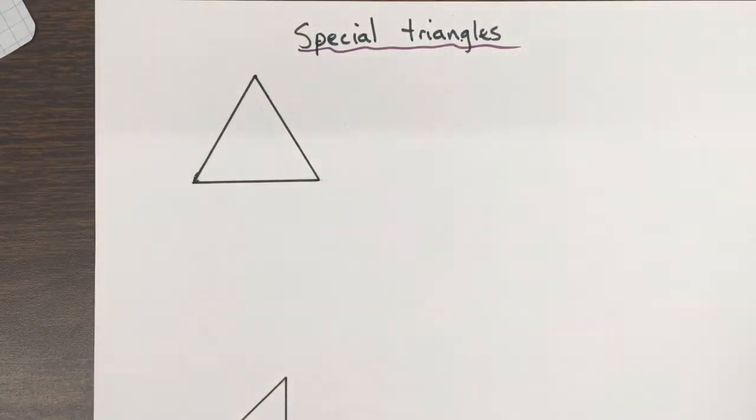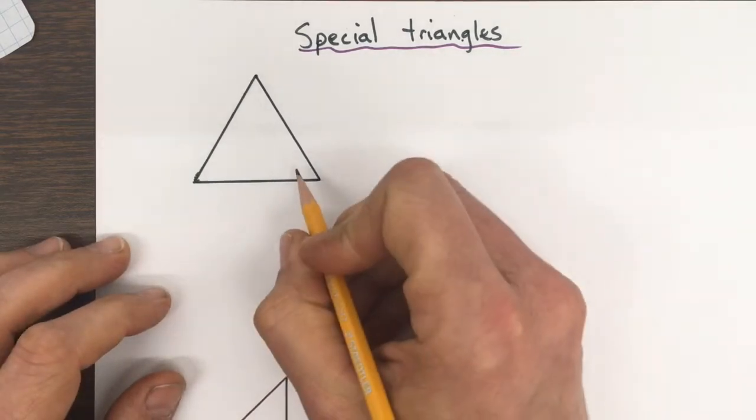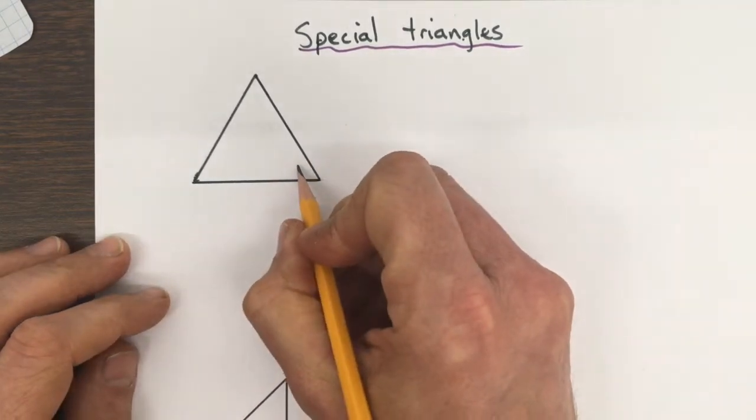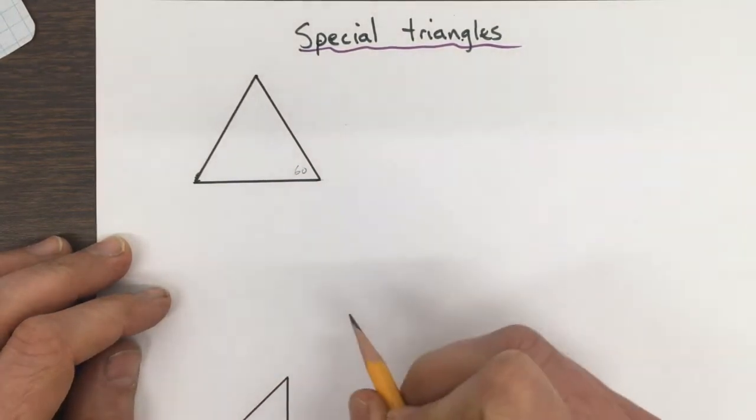The first special triangle we're looking at is the equilateral triangle, where we've got 60 degree angles at every corner.